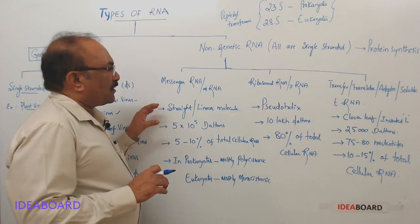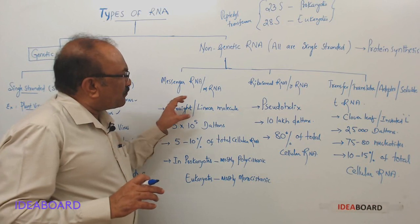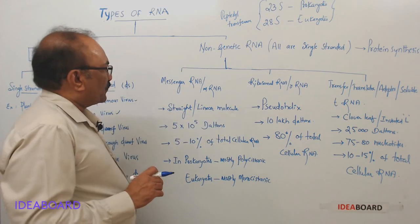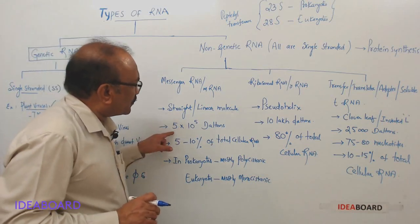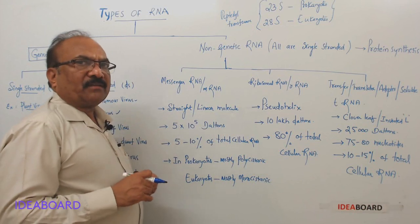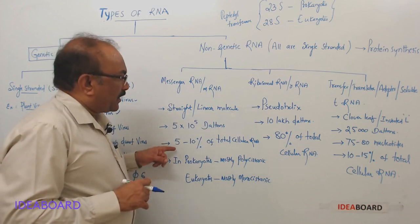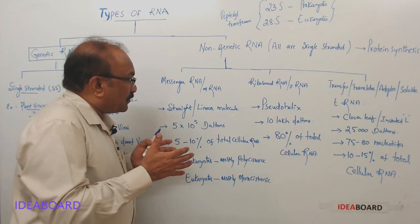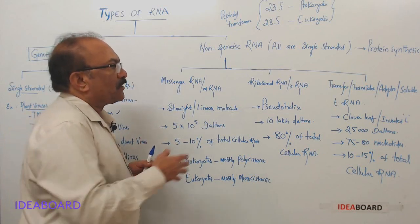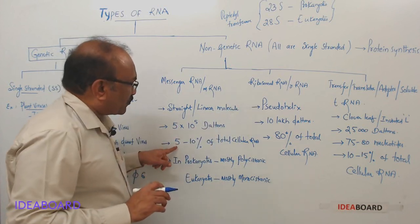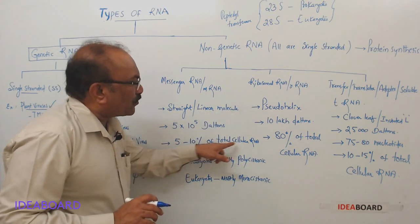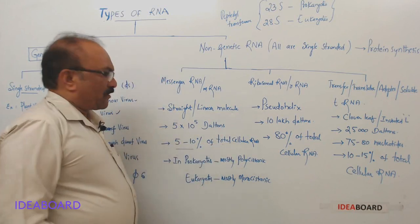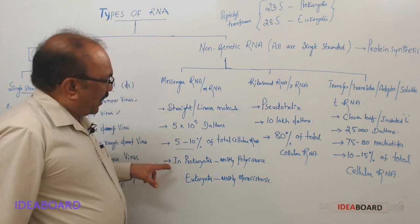Messenger RNA always exists in a straight form - it is a linear molecule. Its molecular weight is 5 × 10⁵ Daltons. When you count the percentage in relation to all three types, it accounts for 5 to 10 percent of the total cellular RNA.